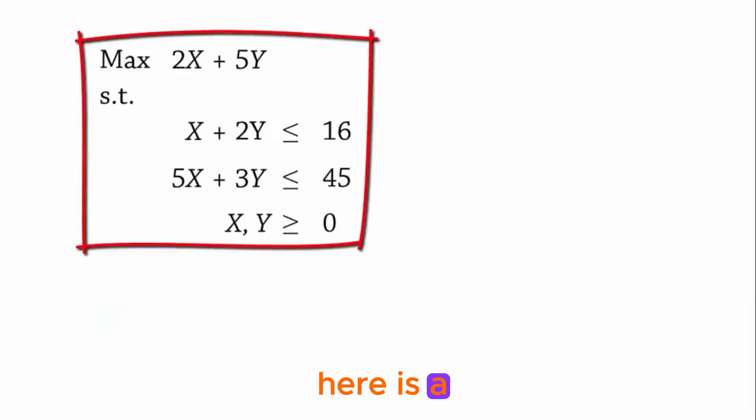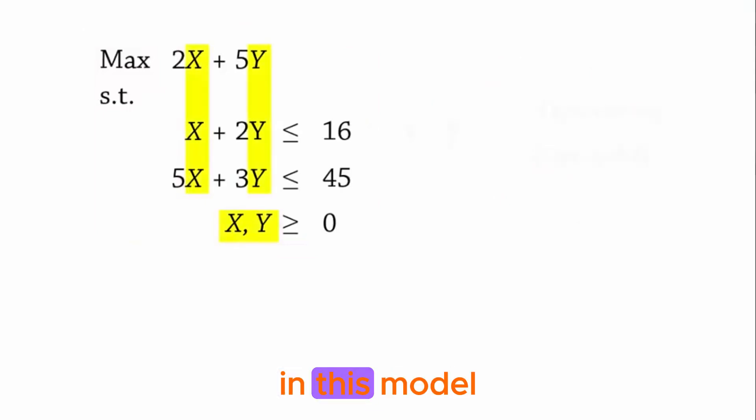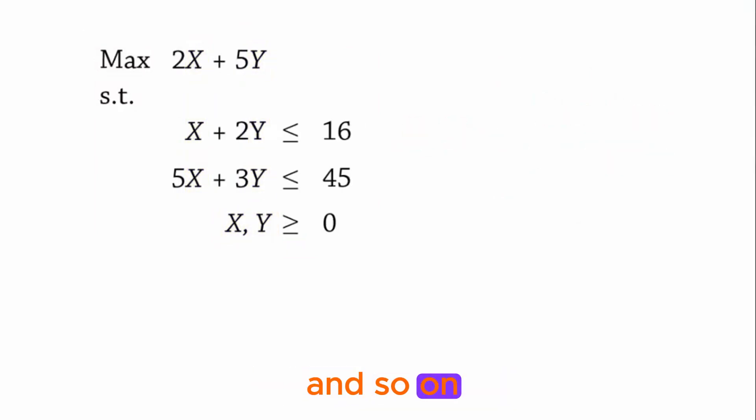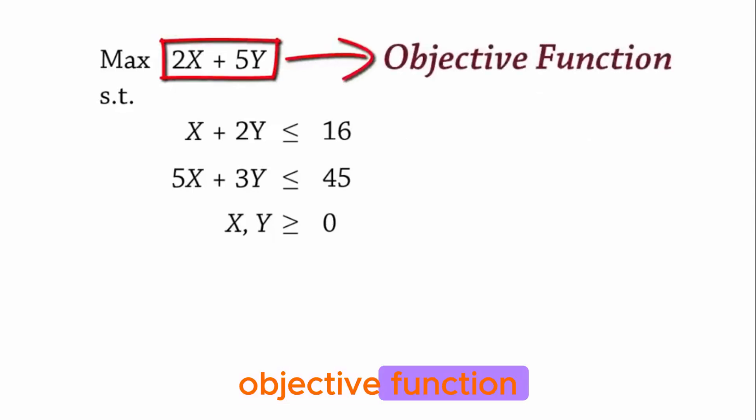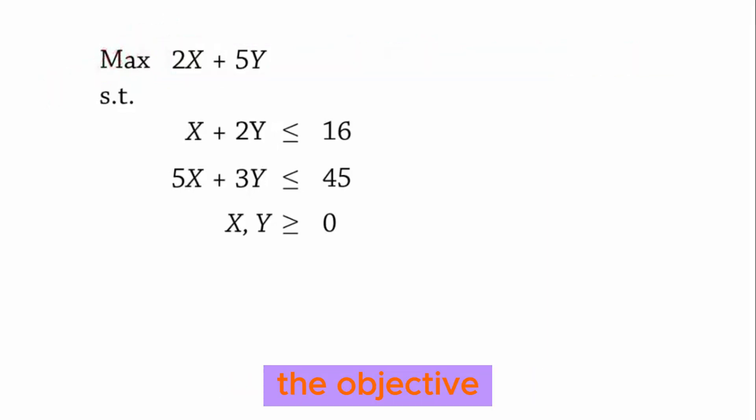What we have here is a linear programming or LP model. The X and Y in this model are referred to as decision variables. They tell us what quantity to buy, produce, sell, or transport, and so on. The 2X plus 5Y here is referred to as the objective function, which we want to maximize. In linear programming, we either maximize or minimize the objective.